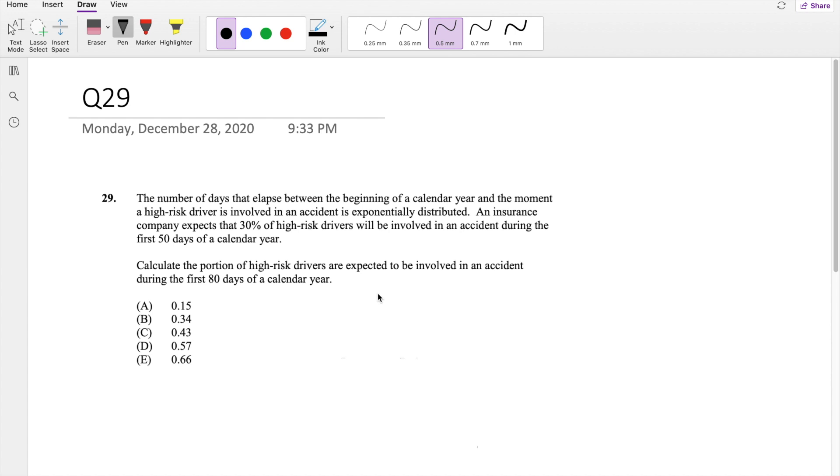Okay, as soon as you've already attempted it, let's just dive right in. The number of days is distributed exponentially. An insurance company expects that 30% of high-risk drivers will be involved in an accident in the first 50 days of the calendar year. So from 0 to 50,